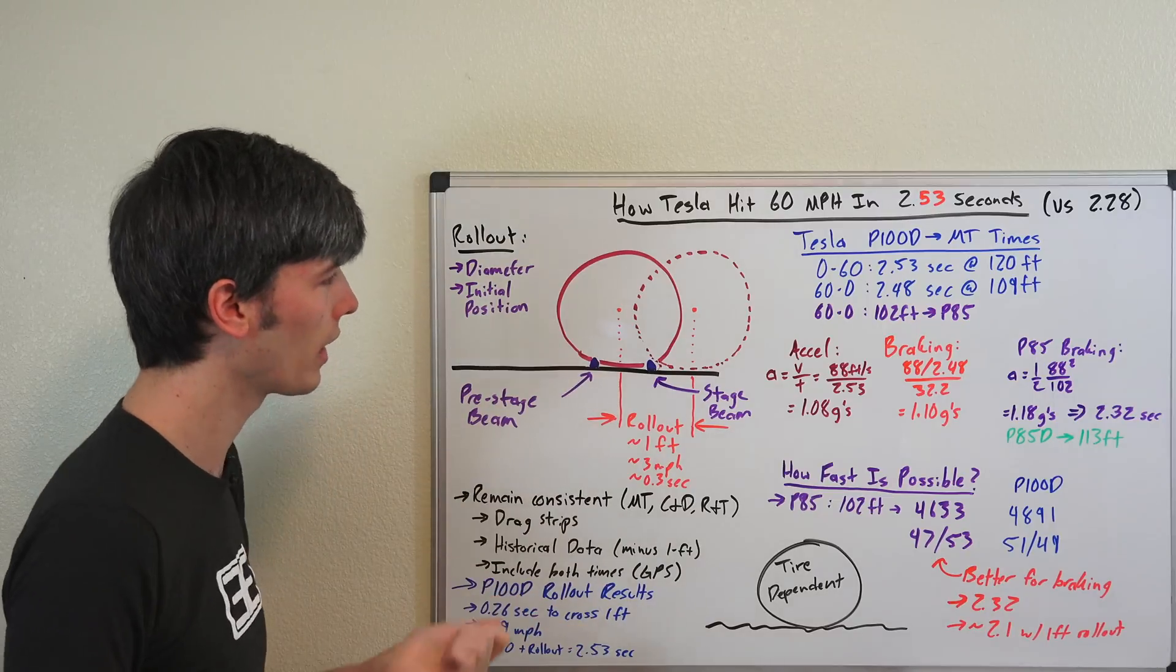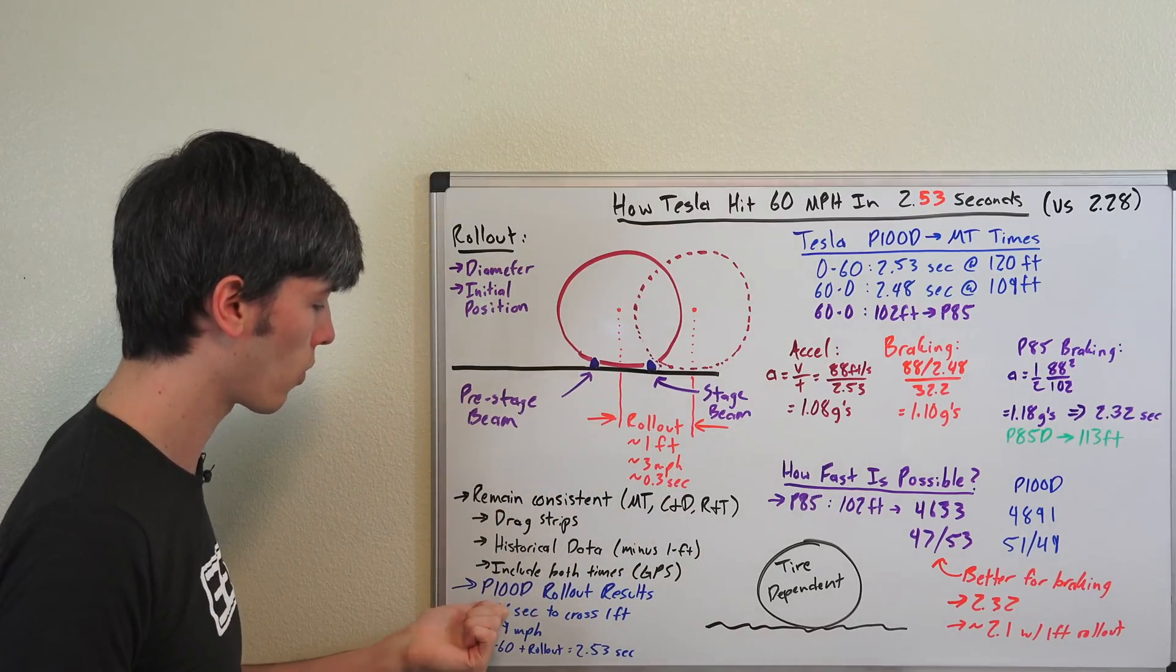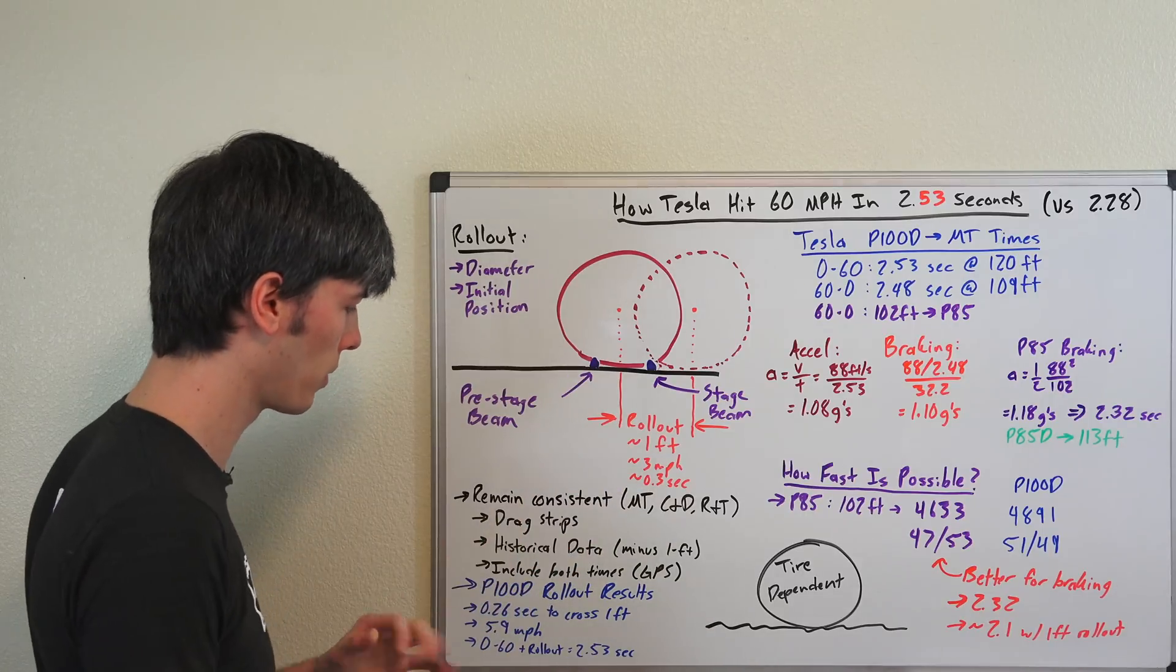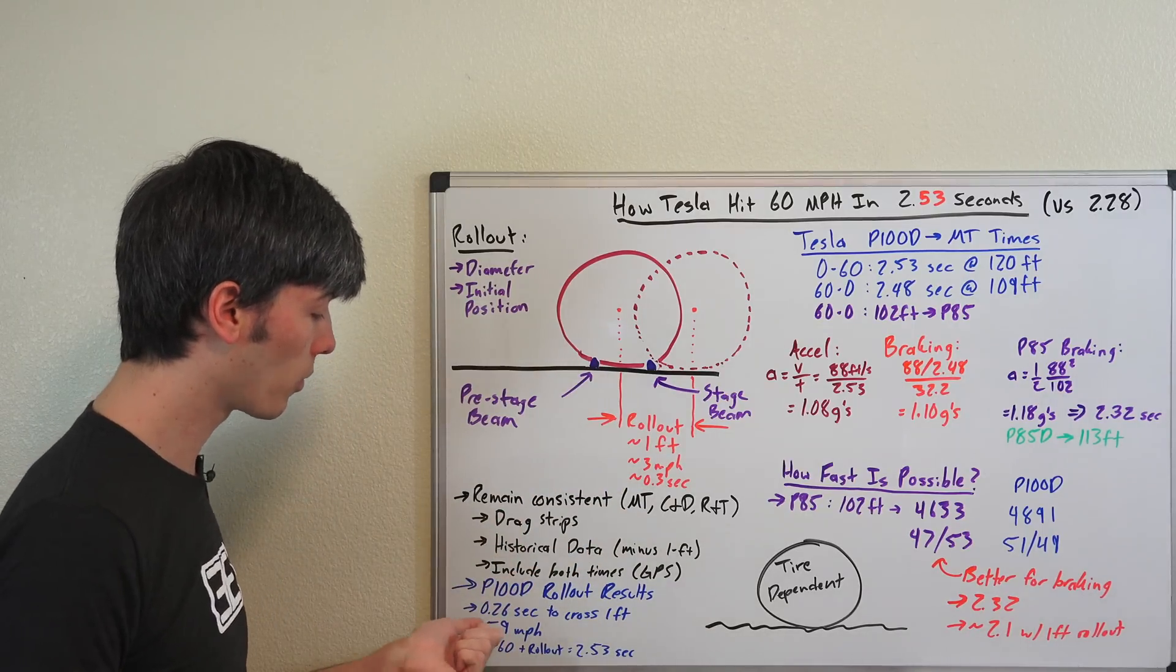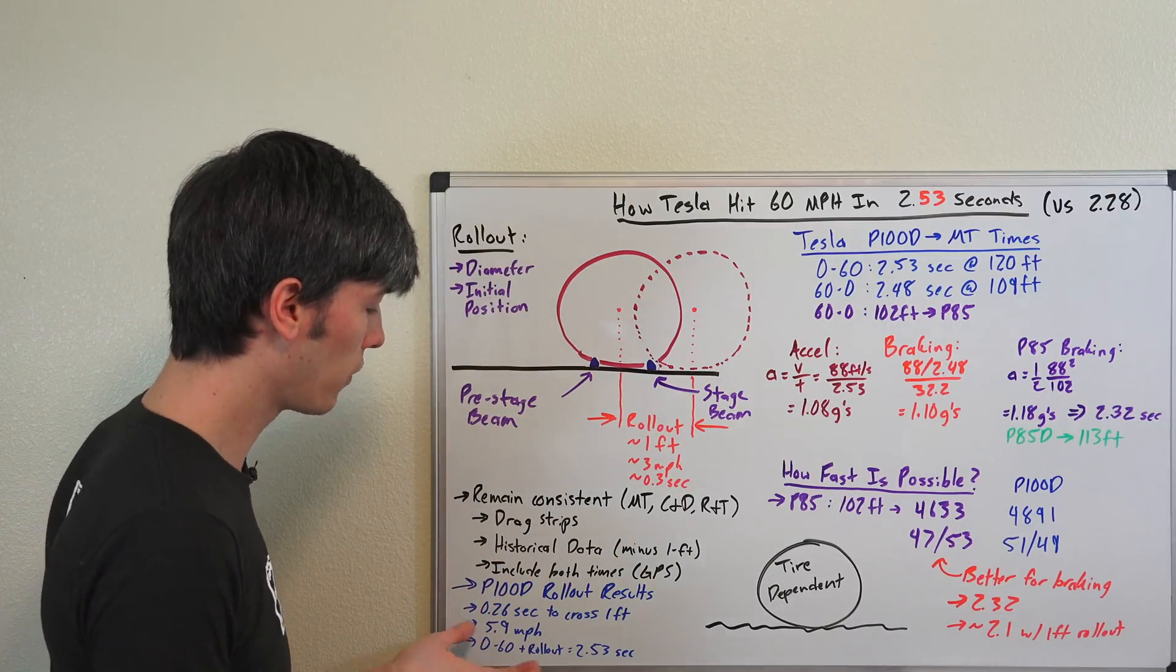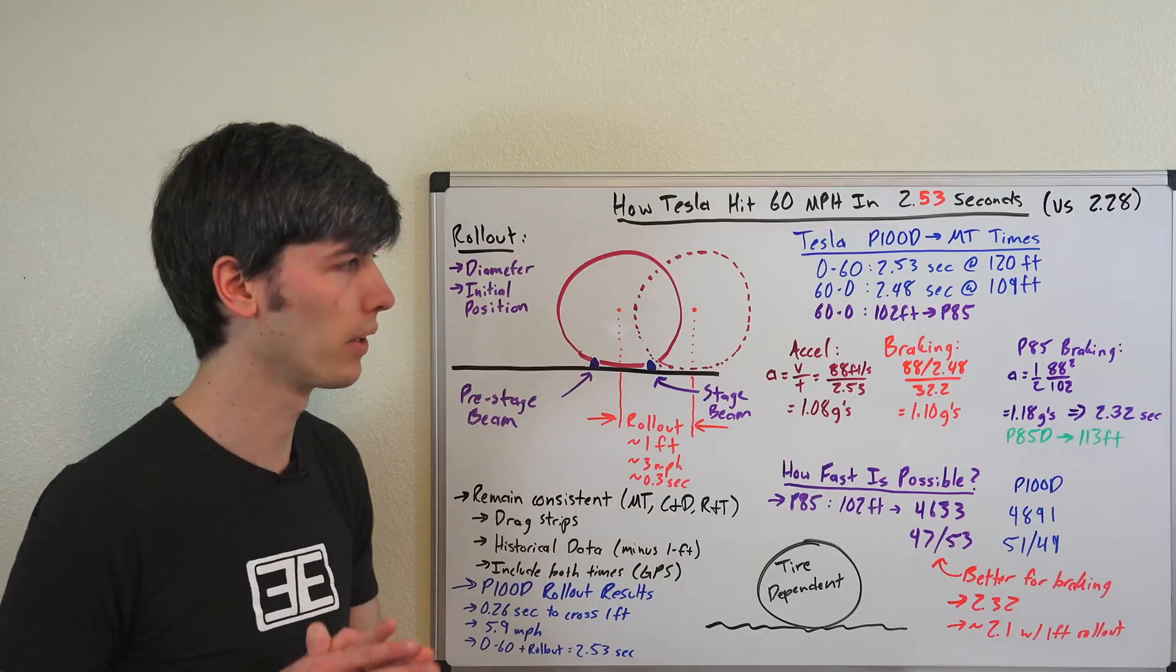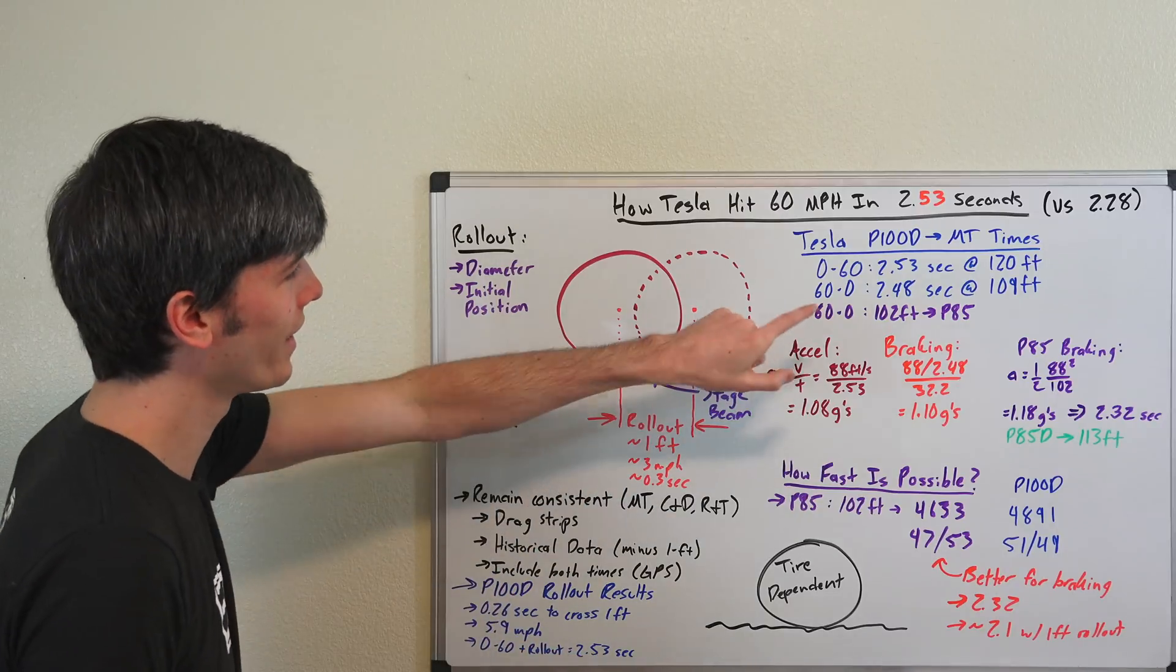So what did the P100 actually do in this? Well, they were actually able to cross that one foot in just 0.26 seconds, a little bit quicker than 0.3, which is kind of an average for cars out there. They were able to accelerate all the way up to 5.9 miles per hour in that first foot, and they were able to achieve, if you include that rollout, a 0 to 60 of 2.53 seconds. Now this number is still actually really cool, and here's why.